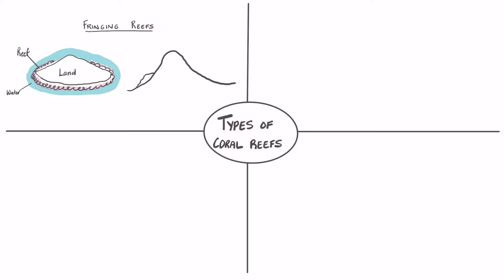They are separated from the shore by a narrow shallow lagoon, and fringing reefs are the most common type of reef that you'll encounter. In fact, fringing reefs are so common that these are the ones that are most affected by human activities.